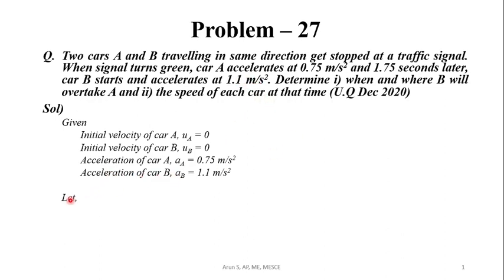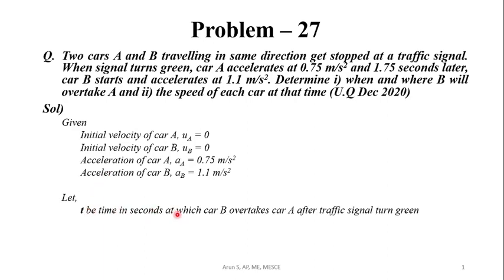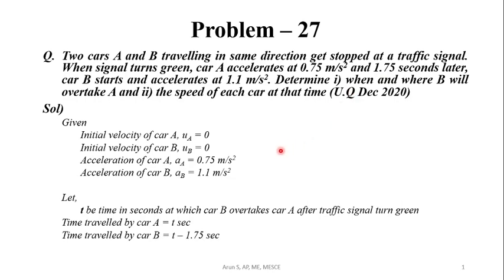Let T be the time in seconds at which car B overtakes car A after the traffic signal turns green. After T seconds, car A has been travelling for T seconds, and car B has been travelling for T minus 1.75 seconds, since car B started 1.75 seconds after the green light.